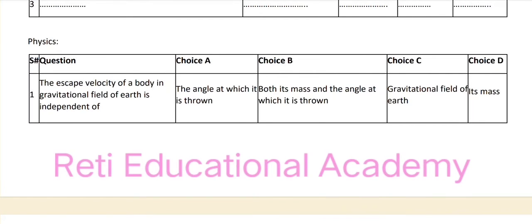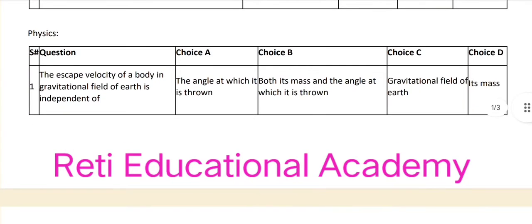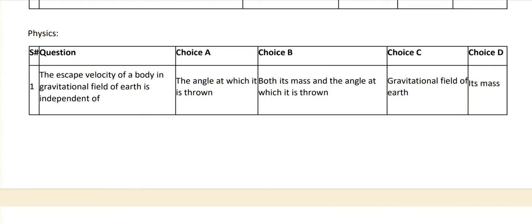Welcome back. I will share physics MCQ sample paper for admissions in Bahria University. Question number one: the escape velocity of a body in a gravitational field of Earth is independent of — Option A: the angle at which it is thrown, Option B: both its mass and the angle at which it is thrown, Option C: gravitational field of Earth, Option D: its mass. The correct answer is B — both its mass and the angle at which it is thrown.